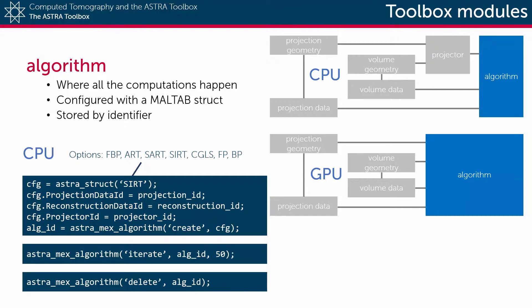The function astra_mex_algorithm is then called to create an algorithm object based on the configuration struct, and an identifier to this object is then returned to the user.